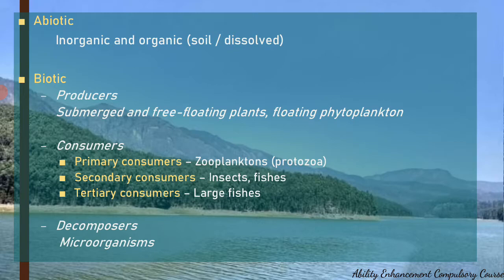The biotic components in a freshwater ecosystem include producers such as submerged and free-floating plants. There are also amphibious plants, which are able to survive in varying water levels. The major type of producer found in any water body is phytoplankton — usually found floating on the water body, these are microscopic algae or microscopic producers capable of photosynthesis.